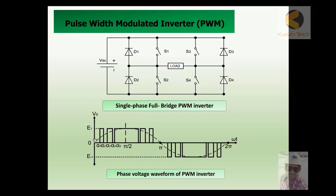At the start you can see the pulse width is small, so the RMS equivalent for this small pulse will be less. More and more pulses are generated — this is just a simplified waveform; we can generate hundreds and thousands of pulses to make this sinusoidal waveform more and more accurate. In this way we are basically reducing the harmonic.